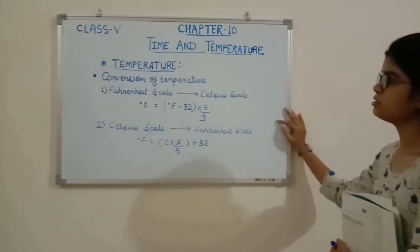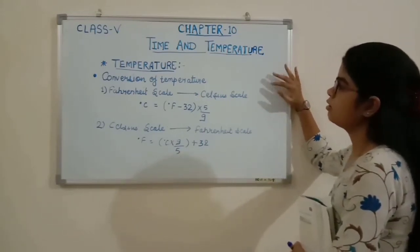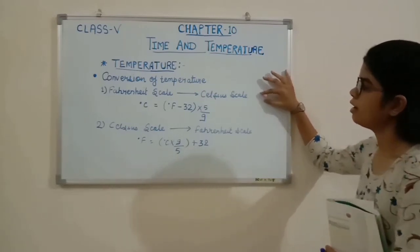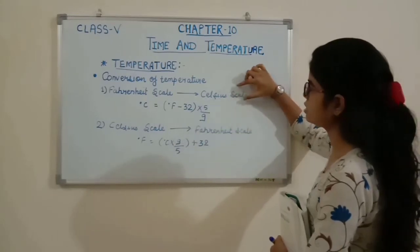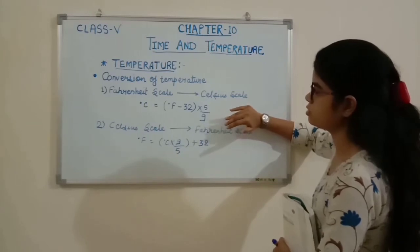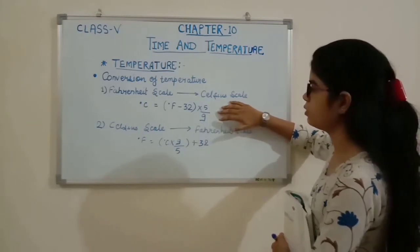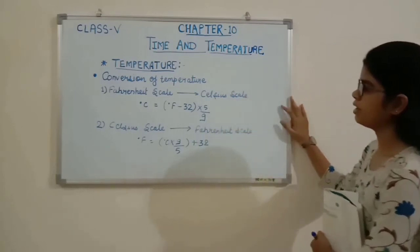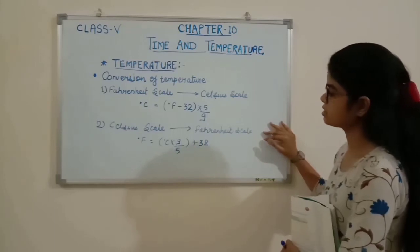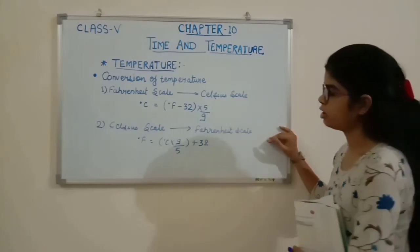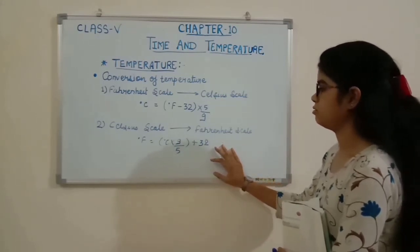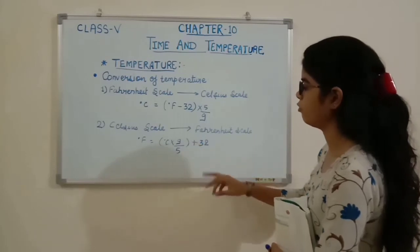The next topic is how to convert temperature. To convert from Fahrenheit to Celsius, the formula is: degree Celsius = (degree Fahrenheit − 32) × 5/9. To convert from Celsius to Fahrenheit, the formula is: degree Fahrenheit = (degree Celsius × 9/5) + 32.